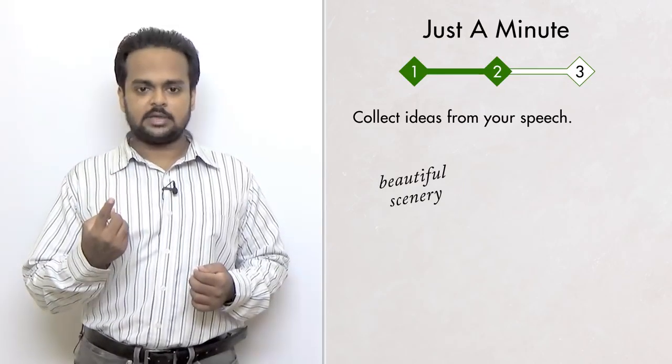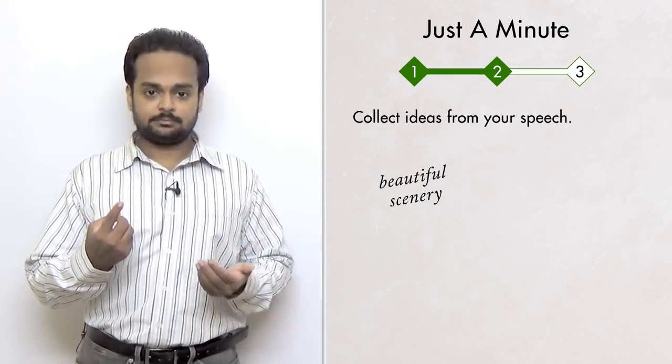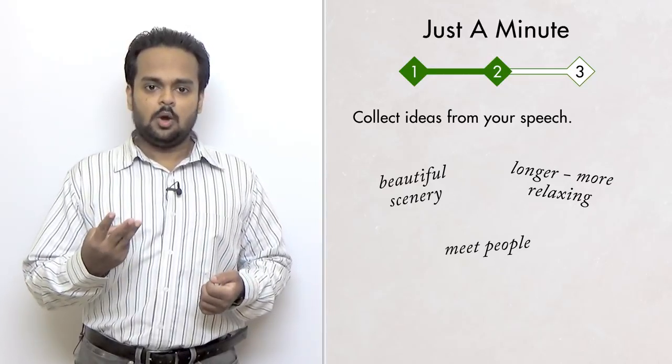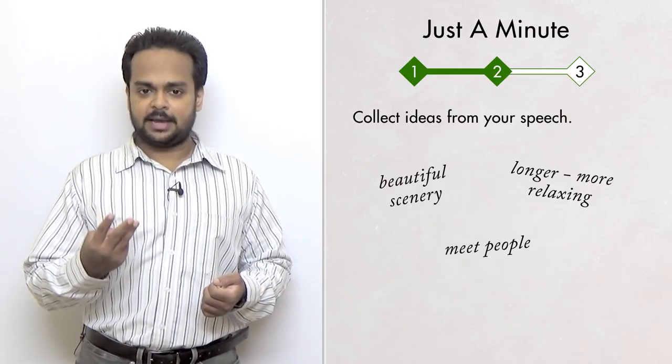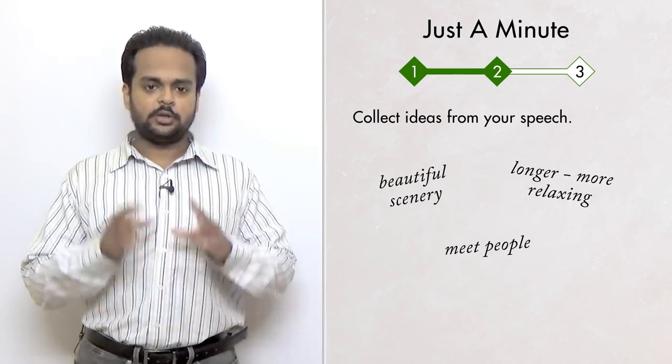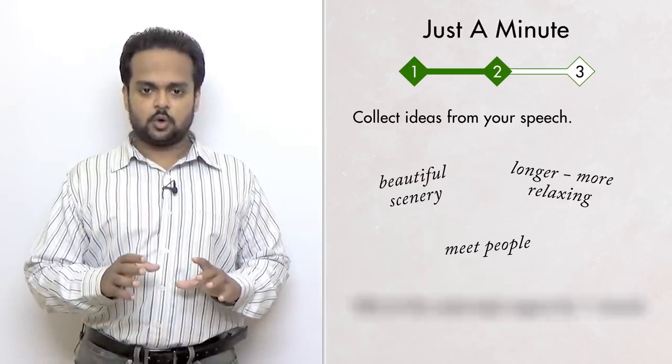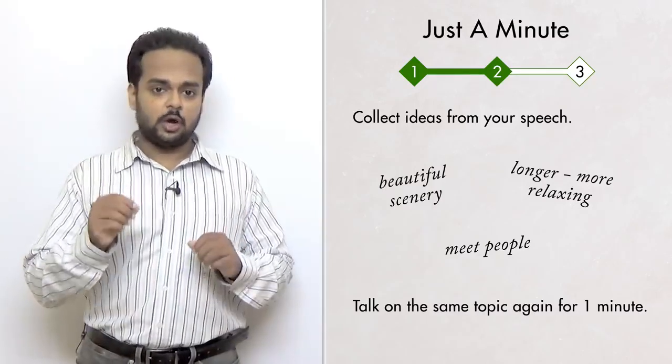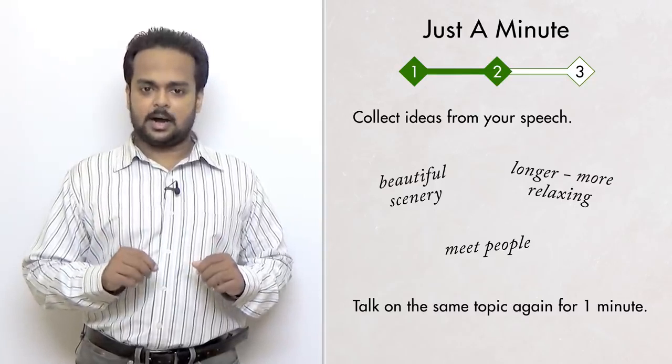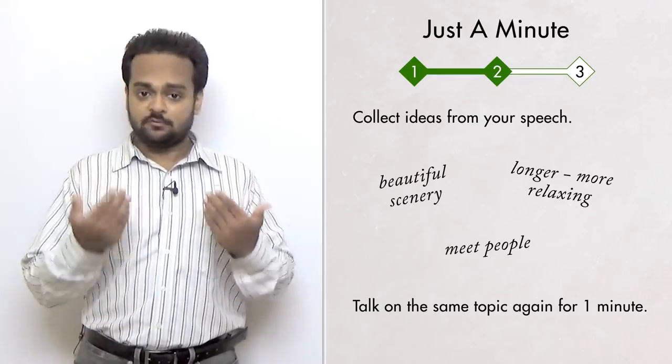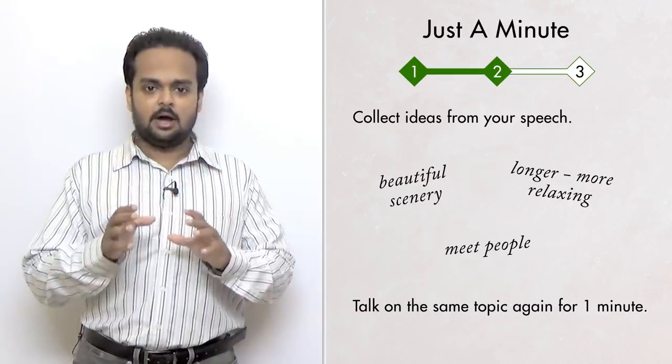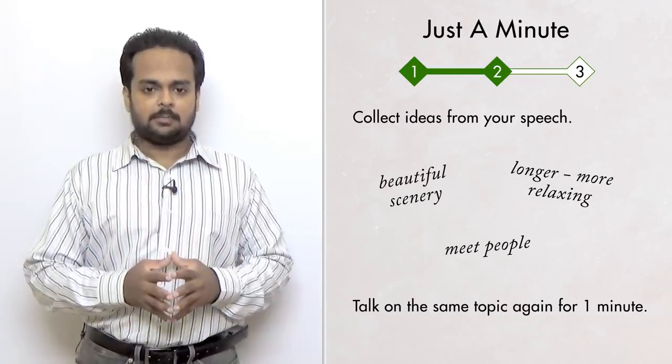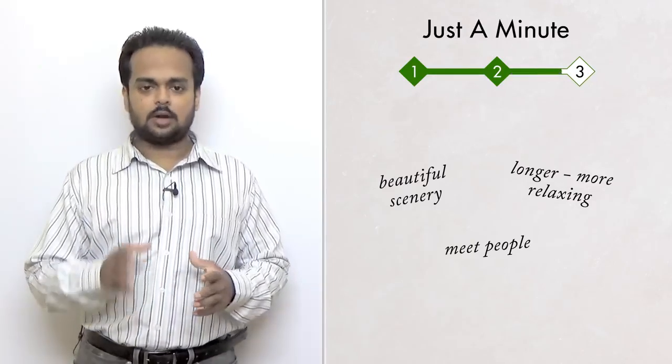The first was that on train journeys, you get to see a lot of beautiful scenery. The second idea was that train journeys are longer, so they're more relaxing. The third idea was that you get to meet interesting people and make friends. So once you have these ideas down, you're going to repeat the exercise. That means you're going to set your timer for one minute and you're going to speak again on the same topic. But now you can use your notes to guide you. You will notice that this time you are actually able to speak more fluently because you have some good ideas on paper and you will be able to expand on your ideas and give more information. Once the timer hits one minute, you stop and we move on to stage three.